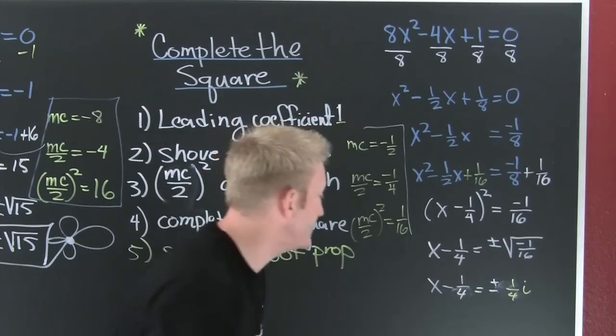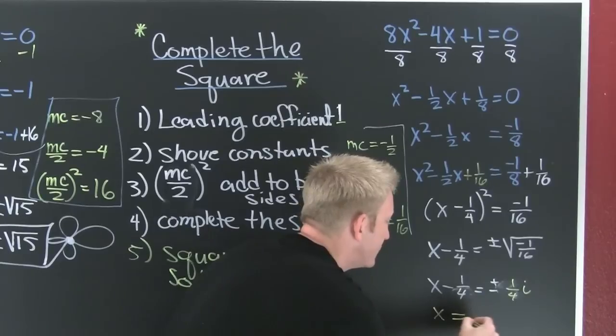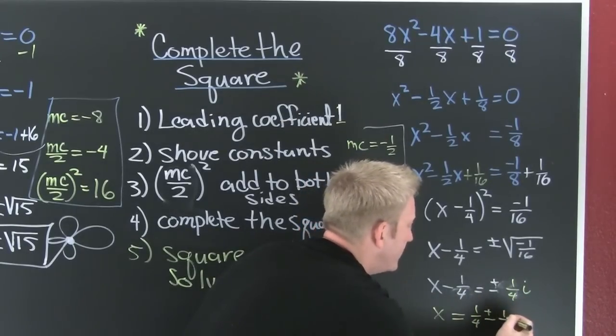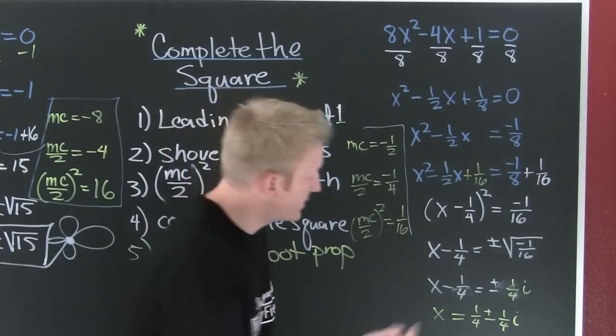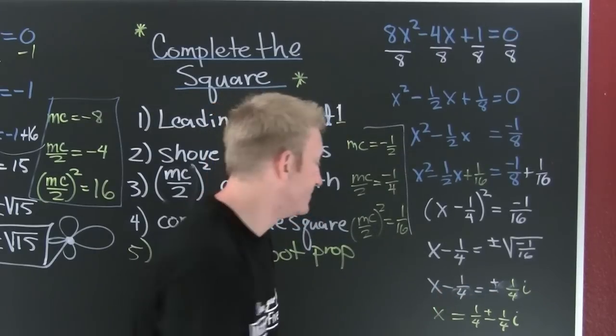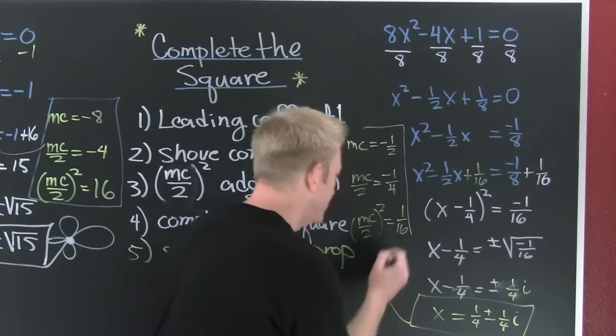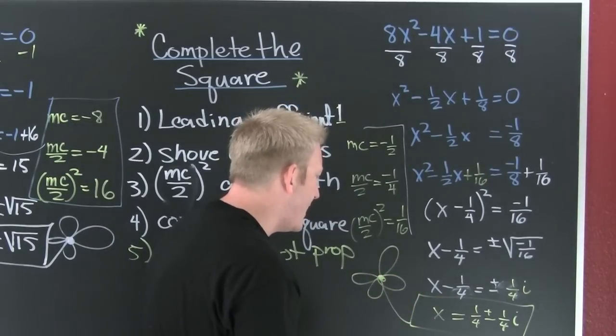Aye, aye, aye. Imaginary. Finish him. So then I have x is equal to 1 fourth plus or minus 1 fourth i. And I say if it's a complex number, leave it like that. Some books will add those numerators. But not me. And a flower.